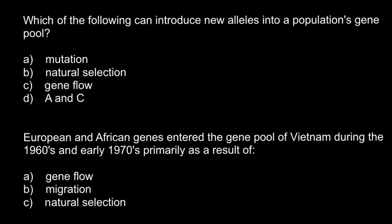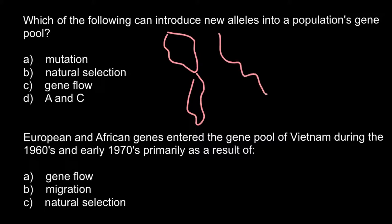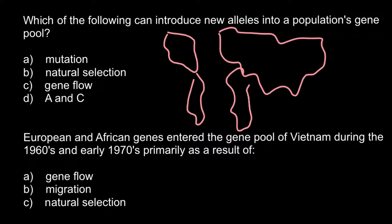And gene flow — of course, gene flow can introduce new alleles. Imagine this is North America, this is South America, this is Europe and Asia, and here is Africa. About 300 years ago, American colonizers brought people from Africa to North America. From the point of view of genetics, this was not just migration — this was gene flow. Not only a flow of people to a new land, but also gene flow, because these people had different allelic frequencies and now affected the allele frequencies in North America.